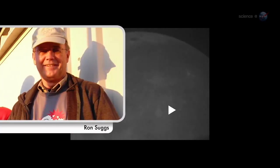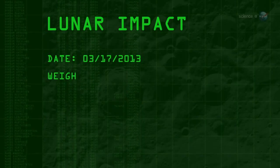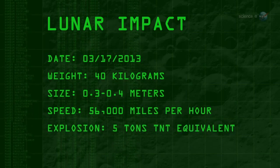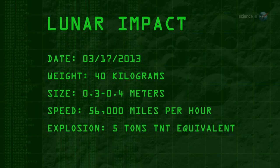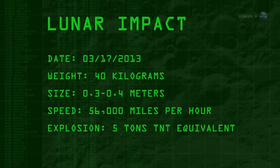Ron Suggs, an analyst at the Marshall Space Flight Center, was the first to notice the impact in a digital video recorded by one of the monitoring program's 14-inch telescopes. It jumped right out at me. It was so bright, he recalls. The 40-kilogram meteoroid, measuring 0.3 to 0.4 meters wide, hit the Moon traveling 56,000 miles per hour. The resulting explosion packed as much punch as five tons of TNT.